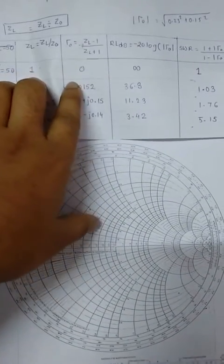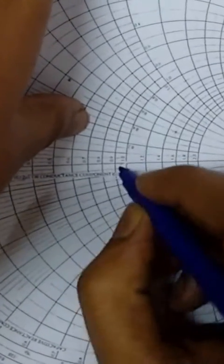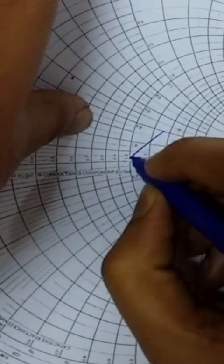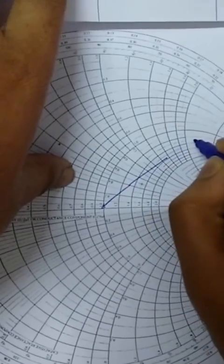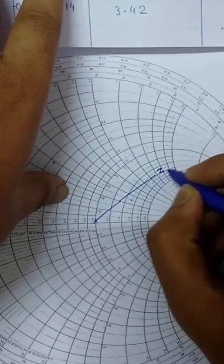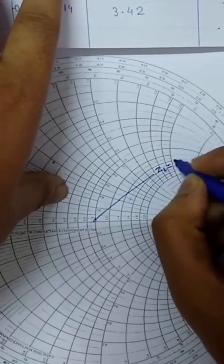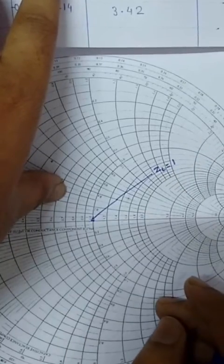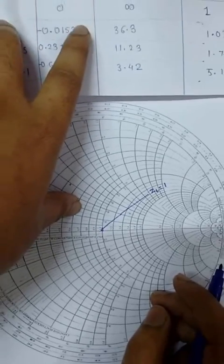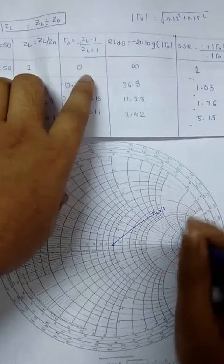So for ZL equal to 1, this is the value here on the center of the chart. And the SWR also is equal to 1.